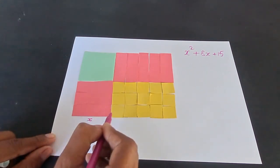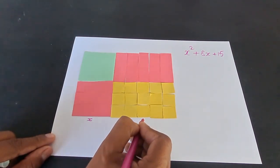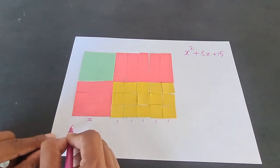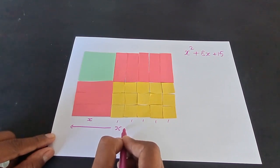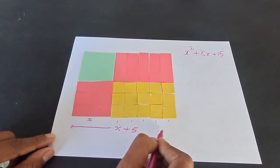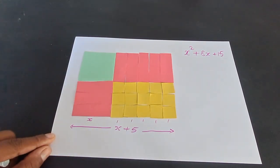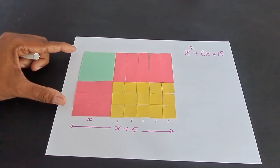This was x. This was 1, 1, 1, 1, 1 and 1. And therefore, the length of this side is x plus 5 units. And similarly, if you want to find the length on the other side, that is the breadth of this rectangle,